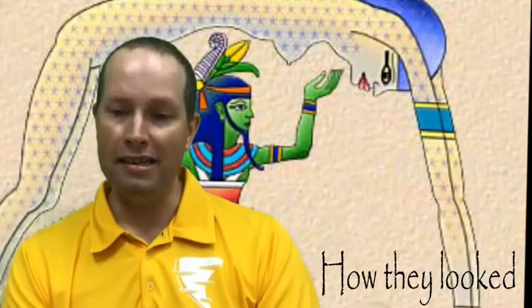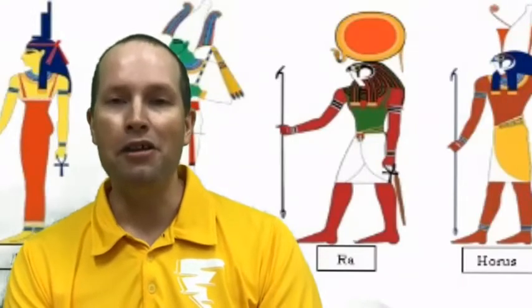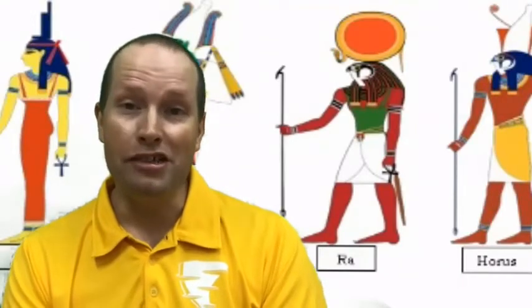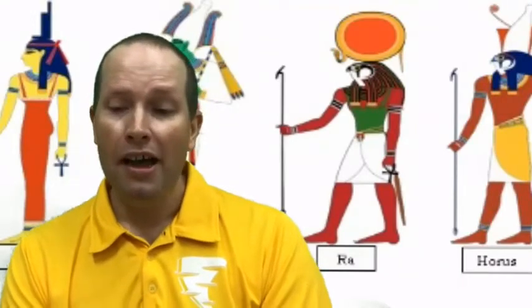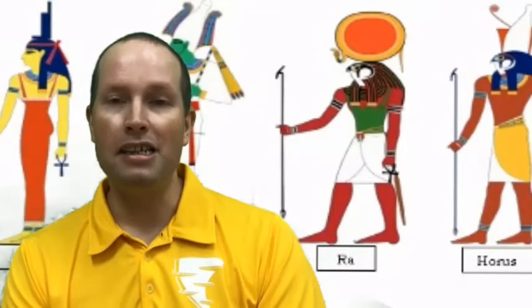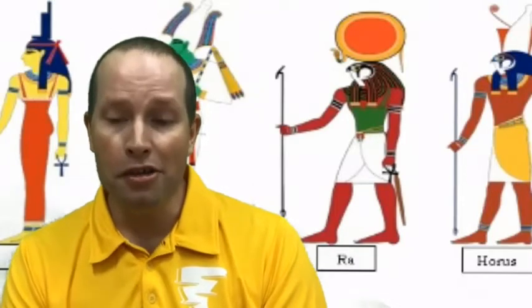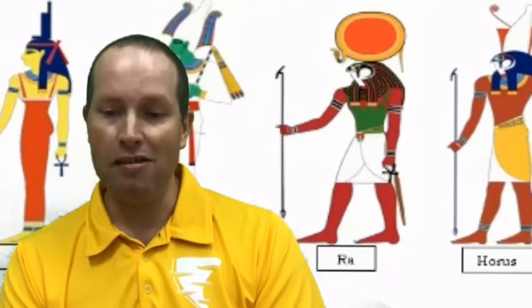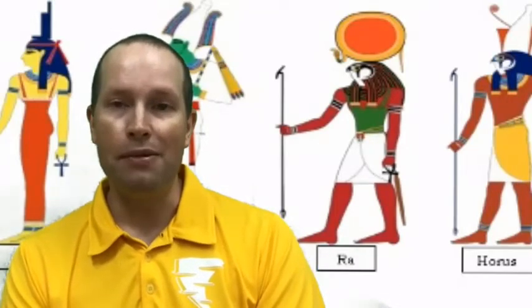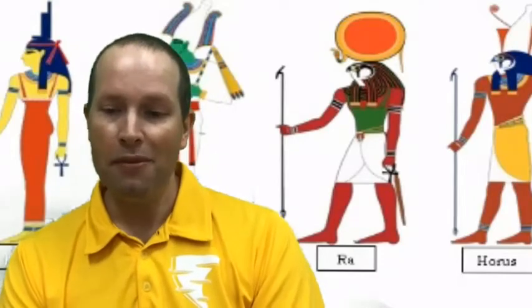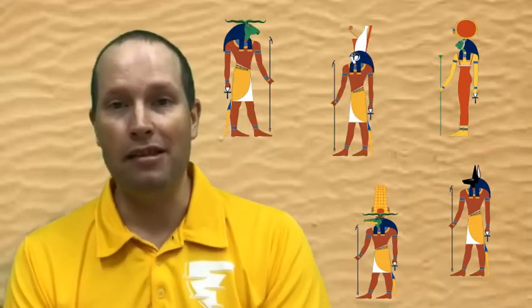Some of the gods and goddesses looked very much like humans. However, others were part human and part animal. Interestingly, the bodies of these ancient gods and goddesses were always human, but their heads looked like birds and animals. For instance, some of them had the heads of animals like a crocodile, jackals, cats, rams and even falcons.